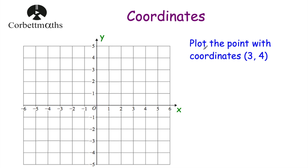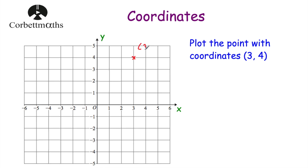Next, we've been asked to plot the point with coordinates (3, 4). So we're going to go 3 along the corridor and 4 up the stairs. Starting at the origin, we go across 3 and then up 4 — 1, 2, 3, 4 — and that would be the point (3, 4). Sometimes you're asked to label it with a letter such as A or B beside the little cross.